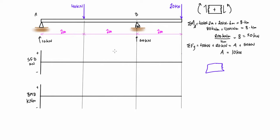We can start drawing our free body diagram from the left-hand side, taking a virtual cut anywhere in the first region since the result will be the same. We have 10 kilonewtons pressing up from the reaction at A and an internal shear force pressing down. 10 kilonewtons up means we need 10 kilonewtons pressing down — that's the positive sense. So we start at positive 10 kilonewtons, and since there's no distributed load, it shoots straight across at positive 10 kilonewtons throughout this region.